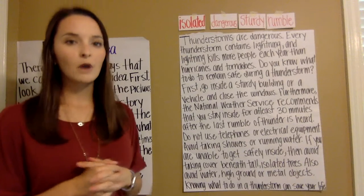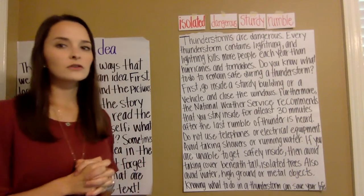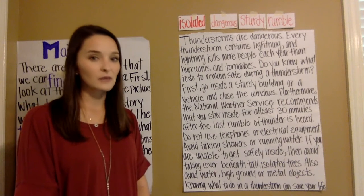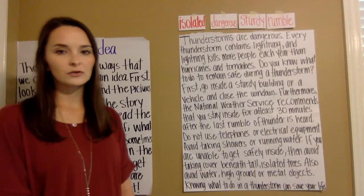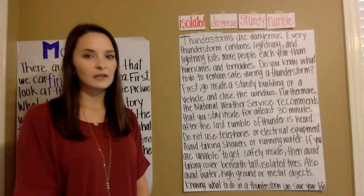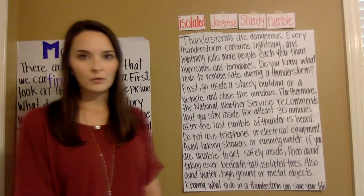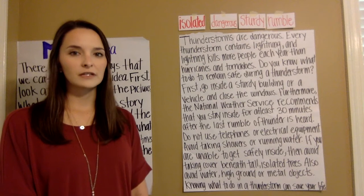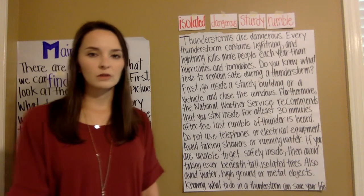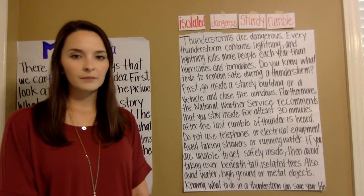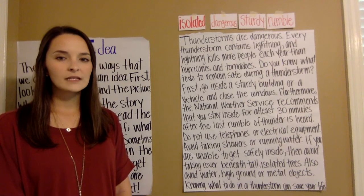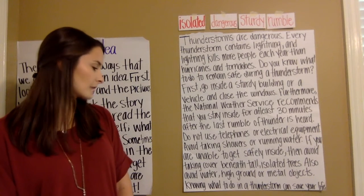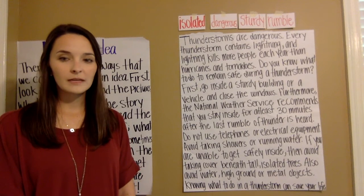So let's read our text together. I want you to read it out loud while you're at home too. Thunderstorms are dangerous. Every thunderstorm contains lightning, and lightning kills more people each year than hurricanes and tornadoes. Do you know what to do to remain safe during a thunderstorm? First, go inside a sturdy building or a vehicle and close the windows. Furthermore, the National Weather Service recommends to stay inside for at least 30 minutes after the last rumble of thunder is heard. Do not use telephones or electrical equipment and avoid taking showers or being near running water. If you're unable to get safely inside, avoid taking cover beneath isolated trees. Also avoid water, high ground, or metal objects. Knowing what to do in a thunderstorm can save your life.